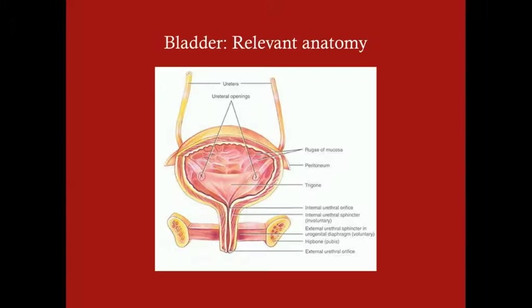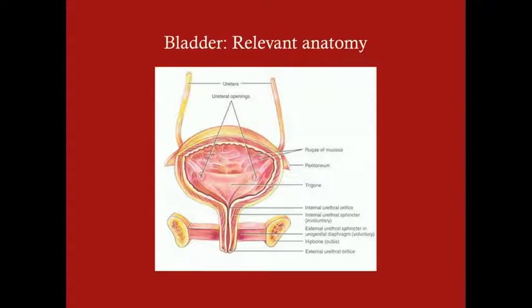We'll talk about the distal GU tract and the trauma it can endure - specifically the bladder and the urethra. As far as anatomy of the bladder, there are three major landmarks: the openings from the ureters, which transport urine from the kidney into the bladder, the internal urethral orifice, which allows urine out through the urethra. You can draw an imaginary triangle between the ureteral openings and this orifice, called the trigone.